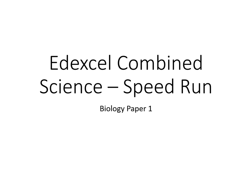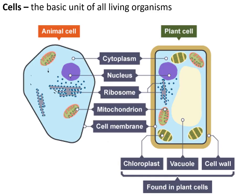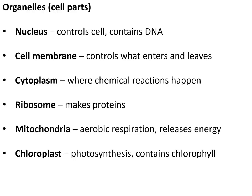Welcome to my Edexcel combined science biology paper one speed run, designed for a final boost just before the exam. Key concept one: cells are the basic unit of all living organisms. Animal cells and plant cells all contain cytoplasm, nucleus, ribosomes, mitochondria, and cell membrane. Plant cells also contain vacuoles, chloroplasts, and a cell wall.